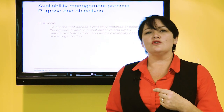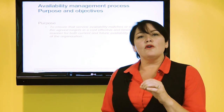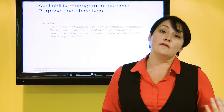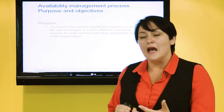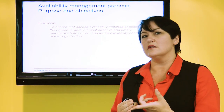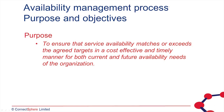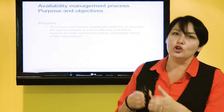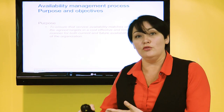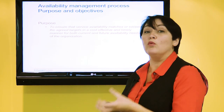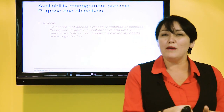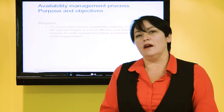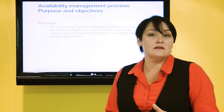That leads us into our four warranty processes — those processes that look at the aspects of warranty from service strategy: availability, capacity, service continuity, and IT security. Availability management has a purpose to ensure that the availability of a service meets the needs of the business. The targets for those needs are found in our service level agreements, and availability management needs to ensure that we meet those needs on an ongoing basis, both planning for the future and checking whether our services are available when our business needs them.